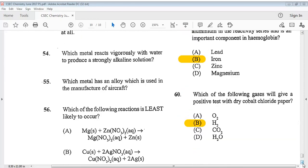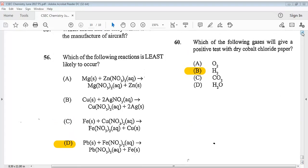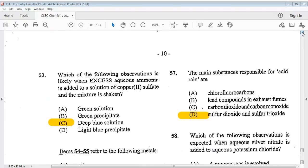Question 56 says, which of the following reactions is least likely to occur? The answer for that is D. Let's go to question 57. It says, the main substances responsible for acid rain are? The answer is D, sulfur dioxide and sulfur trioxide.